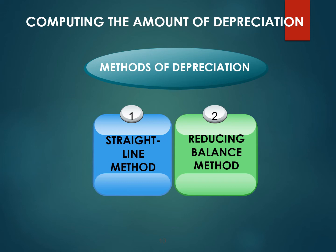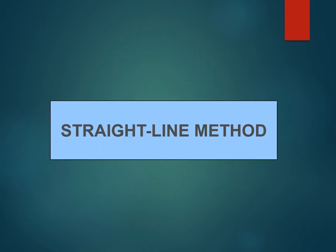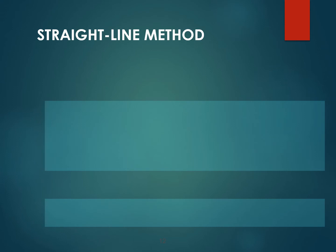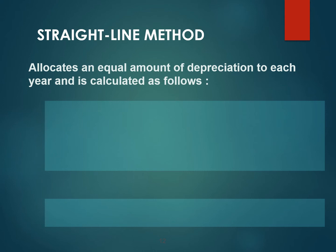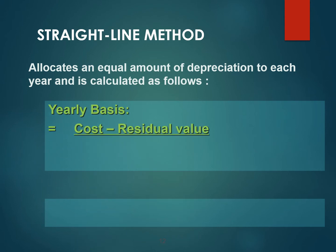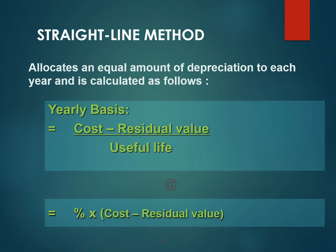We come to the methods of depreciation. We are going to learn about two methods for calculating depreciation. In this lesson, I will only focus on the first and easiest method, the straight-line method. This method allocates the amount of depreciation equally for each year until the end of its useful life. The formula is: cost minus residual value (also called scrap value or salvage value) divided by useful life, or alternatively, the percentage of depreciation times cost minus residual value.